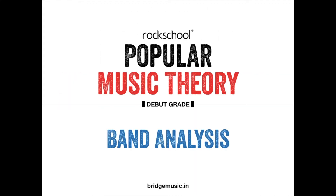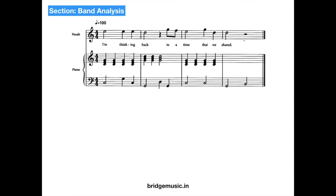Now we get into the band analysis where we study the score written for a band or couple of instruments and answer questions based on that. This will bring together everything you have learnt in the debut grade so far. Here is an extract with questions. What is the tempo of this piece? In the top left corner, just above the staff, you can see a quarter note equal to 100, meaning 100 quarter note beats in a minute — so the tempo is 100 BPM.